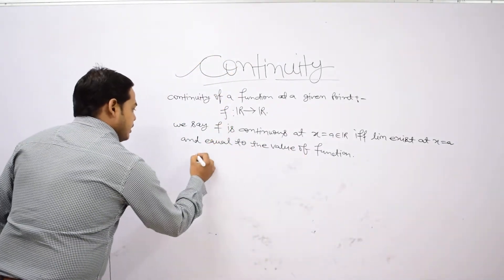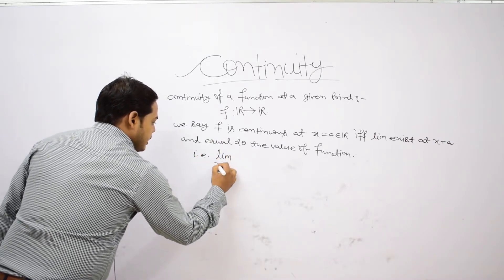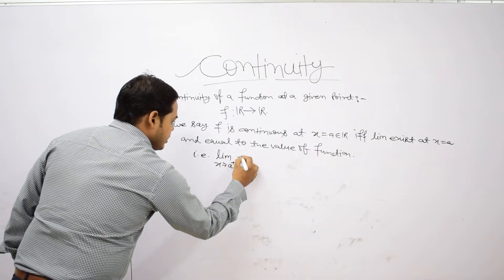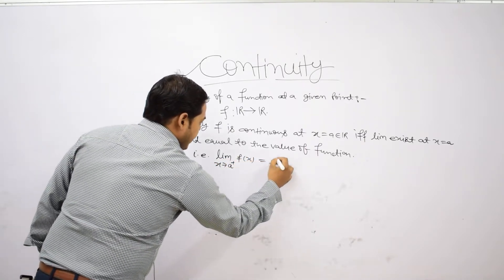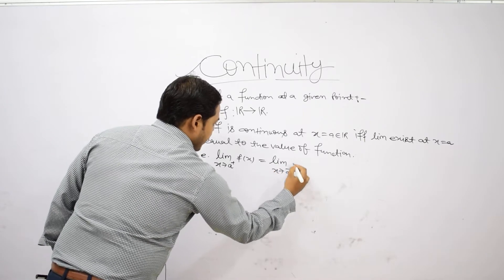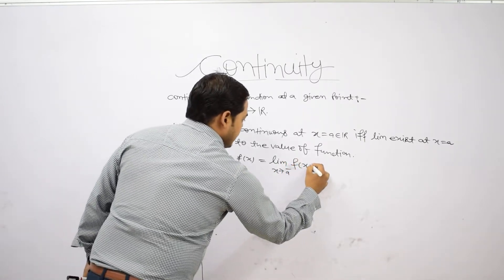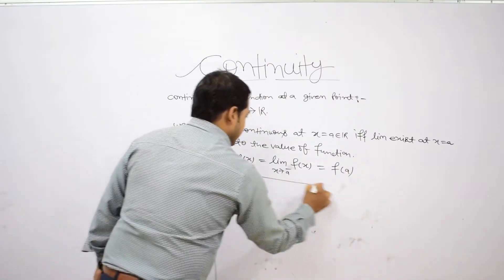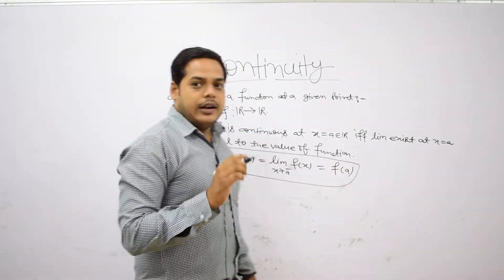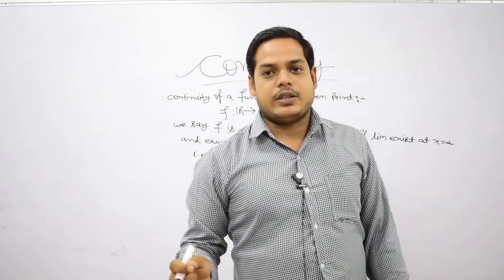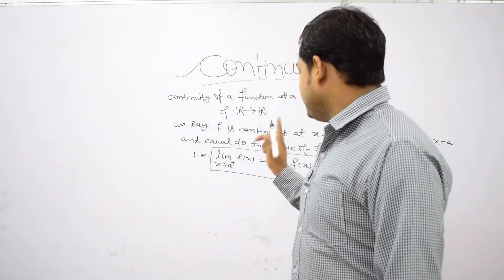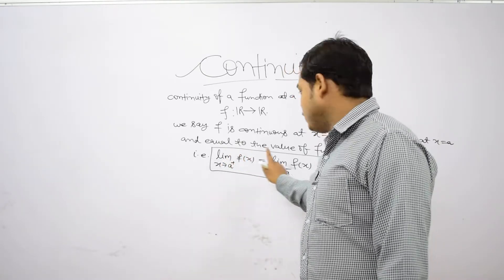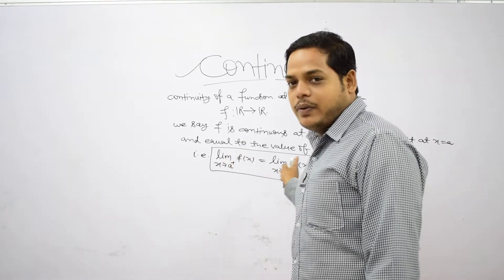The condition is: limit as x tends to a from the right of f(x) equals limit as x tends to a from the left of f(x), and this is nothing but the value of the function f(a). This is the condition to check continuity at a given point. We say the function is continuous at x = a if left hand limit equals right hand limit equals the value of the function.